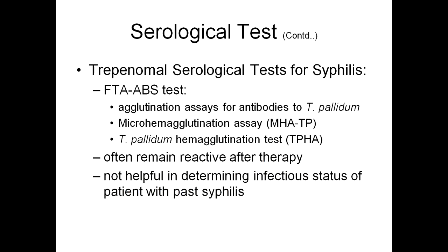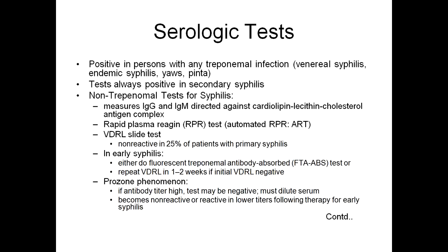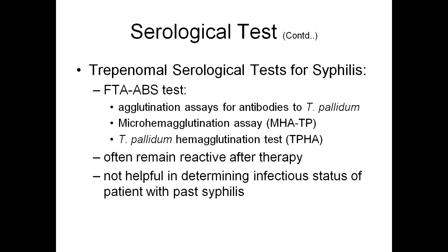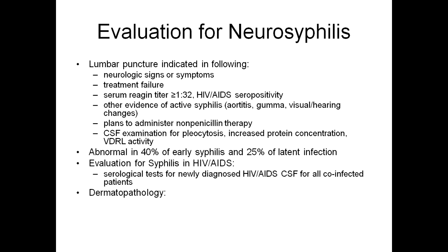Treponemal serological tests include the Fluorescent Treponemal Antibody test, agglutination assays for antibodies to Treponema pallidum, Micro-hemagglutination Assay, and the Treponema Pallidum Hemagglutination test (TPHA), which is commonly done. These often remain reactive even after therapy and are not helpful in determining the infectious status of a patient with past syphilis. Once TPHA becomes positive, it will remain positive throughout the life of the patient.